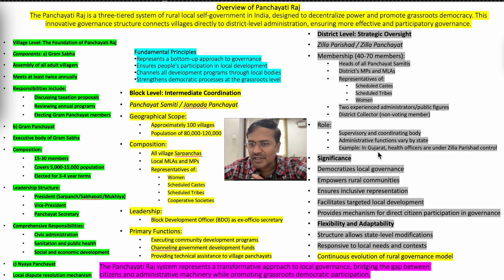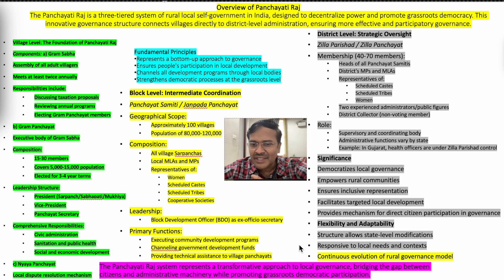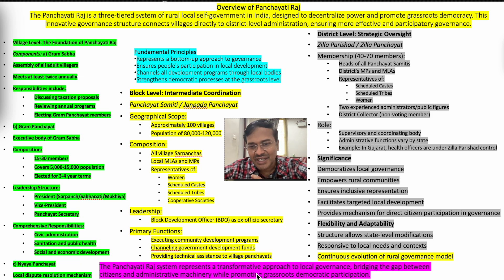The Jilla Parisad's role is as a supervisory and coordinating body; administrative functions vary by state — for example, in Gujarat, health offices are under Jilla Parisad control. The significance of Panchayat Raj is that it democratizes local governance, empowers rural communities, ensures inclusive representation, facilitates targeted local development, provides a mechanism for direct citizen participation, and allows state-level modifications responsive to local needs, enabling continuous evolution of the rural governance model.